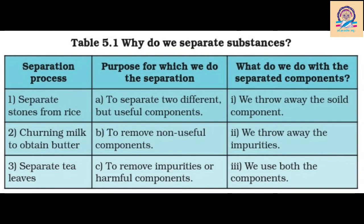We have taken three separation processes as examples. For each, we'll look at the purpose and what we do with the separated components. The first separation process is separating stones from rice. The purpose is to separate two different but useful components — the rice and the stones. We throw away the impure solid components, which are the stones present in the rice.